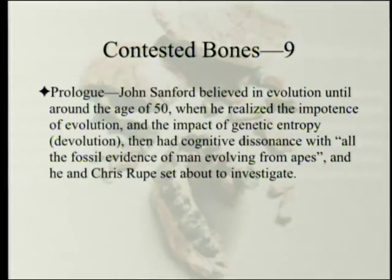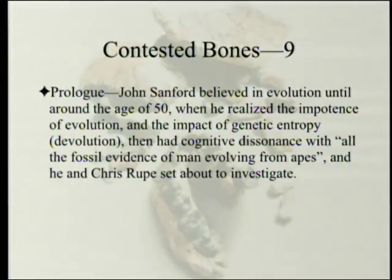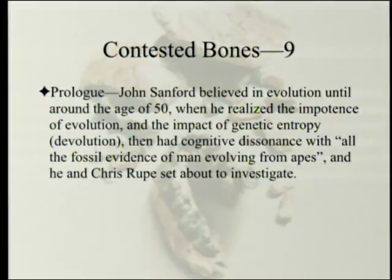In the prologue, John Sanford relates that he believed in evolution until around the age of 50, when he realized the impotence of evolution and the impact of what he calls genetic entropy — what might also be called devolution, perhaps the opposite of evolution — and then had cognitive dissonance with all the fossil evidence of man evolving from apes. Devolution meant that species can't live for millions of years; they should disappear. And yet supposedly there's all this fossil evidence that apes kept getting better until they became people. Being a scientist, he decided to investigate and got Christopher Rupp to help him.